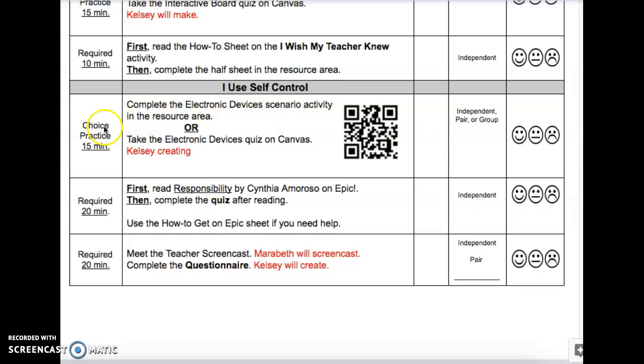After you do the choice practice, there's a required activity. It's 20 minutes. It says first read Responsibility by Cynthia Amoroso on EPIC. Then complete the quiz after reading. So after you finish this on EPIC on the last page, there'll be a quiz that's right after the book. It says to use the how-to get on EPIC sheet if you need help.